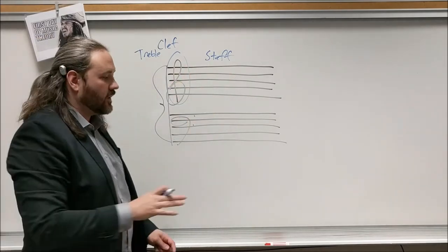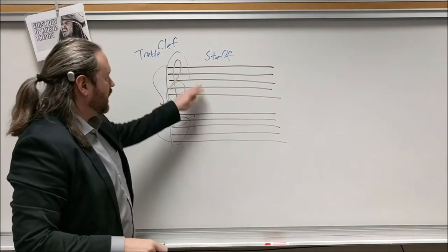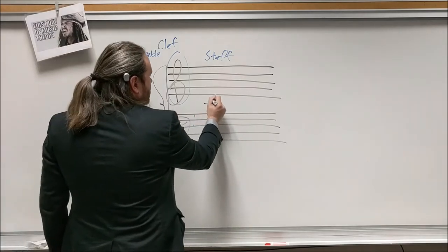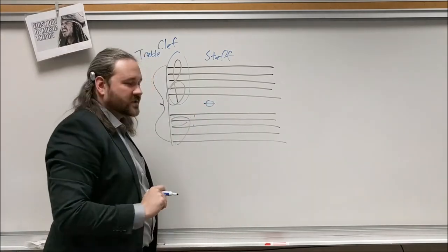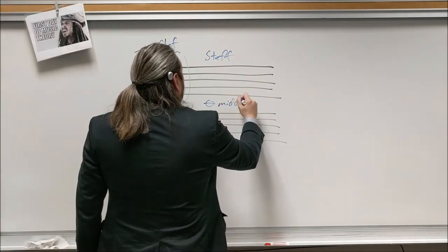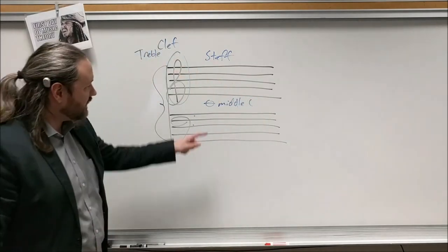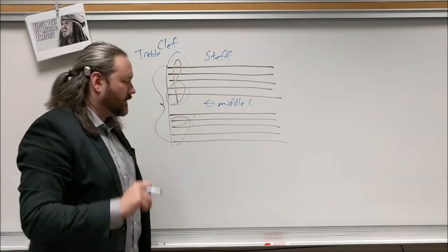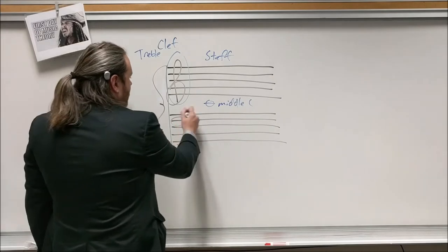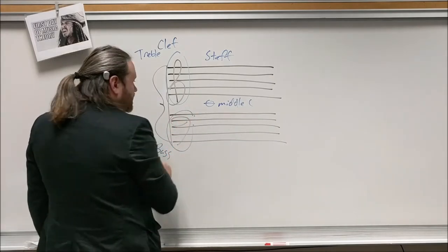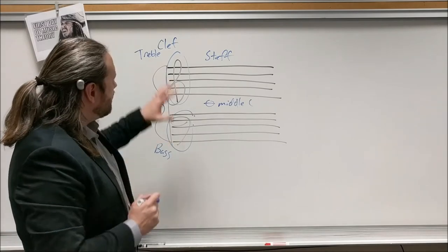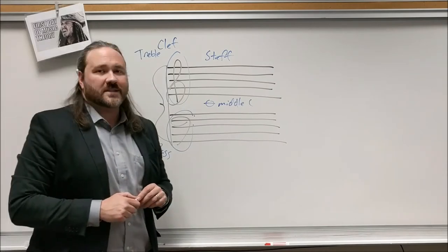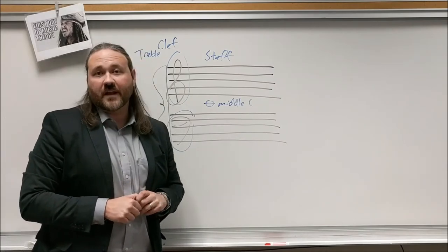The treble clef staff notates notes in the higher register of the piano — all the right-hand notes are in treble clef, all the left-hand notes in bass clef. Right in the middle is middle C, called that because it's in the middle of the keyboard and between the two staves. There's also bass clef, and another clef you may need is alto clef, which is what viola reads in.